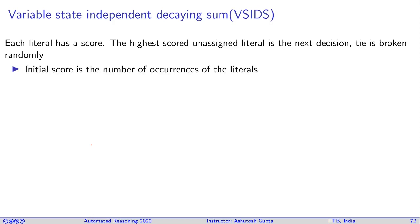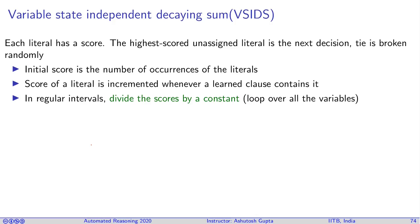Initial score is the number of occurrence of that literal. Then each time a learned clause is found and if a literal appears in that learned clause, then you increment that literal's score. Maybe after every thousand conflict clauses or so, you scale all the assigned scores by some factor. This helps you to make sure that the old scores get less and less value and recently learned clauses contribute more to the score.